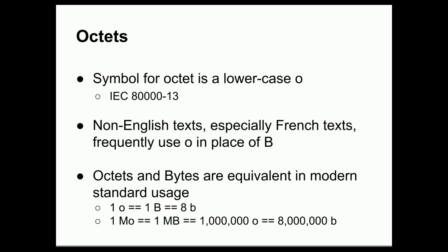So by modern standards, one octet is equal to one byte, and that's equivalent to eight bits. If you see a French text that says one capital M lowercase o, that is equivalent to one uppercase M uppercase B, which is equivalent to one million octets or one million bytes or eight million bits.